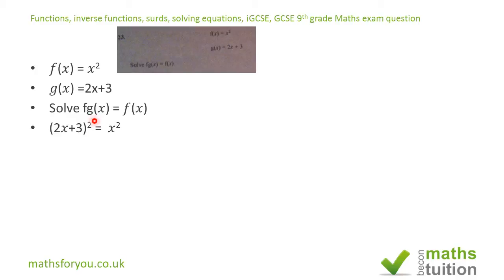That's equal to x squared because f(x) is x squared. If we open the brackets on this one we end up with 4x² + 12x + 9 = x². If we take x squared across the sign we change, so it becomes 4x² minus x².